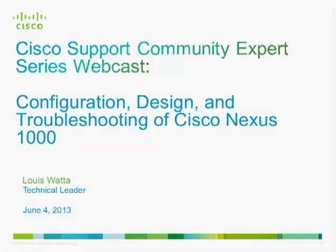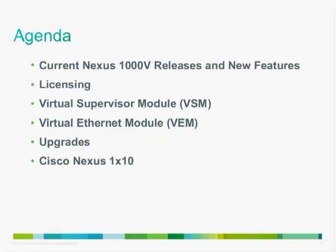We're going to go over configuration, design, and troubleshooting of the Cisco Nexus 1000V. We'll cover basic ideas of things you should be thinking about when you want to deploy the product — some gotchas, things to watch out for, things we've learned through four years of actually working with the product at Cisco. The agenda includes current Nexus 1000V releases and new features, licensing, the virtual supervisor module, the virtual Ethernet module, troubleshooting, upgrades, and if there's time, the Cisco Nexus 1010 and 1110.